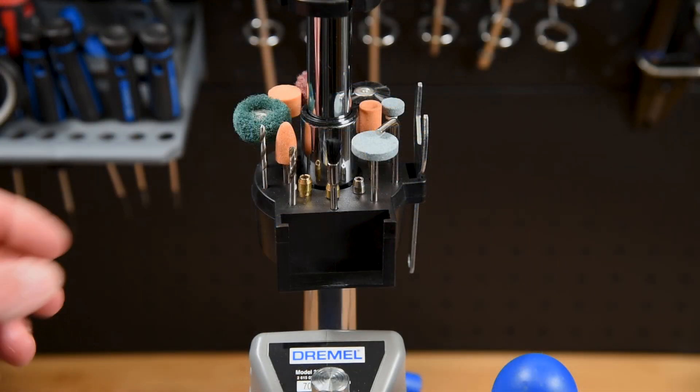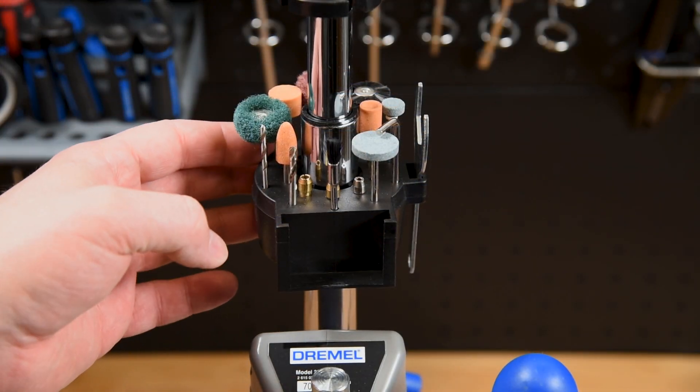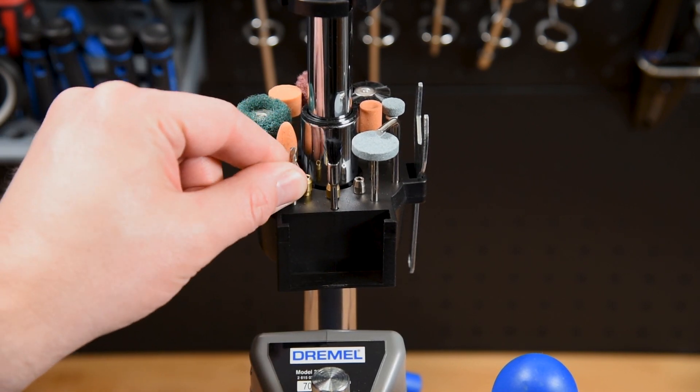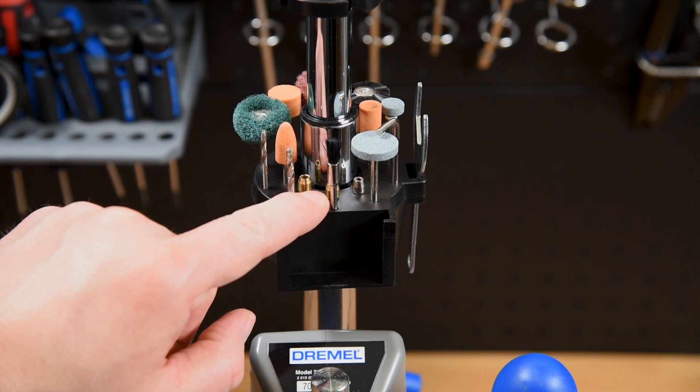The top of the unit contains this little tool tray that lets you store all your favorite bits on top of your station and also gives you a place to store the wrench that locks your rotary tool onto the housing unit.